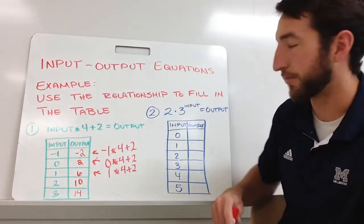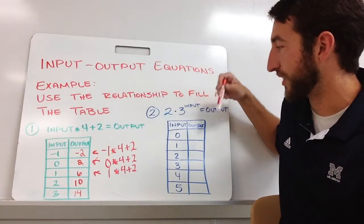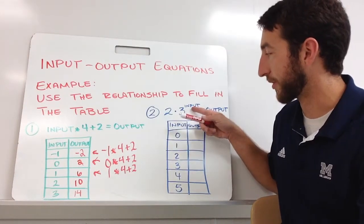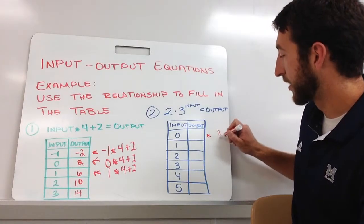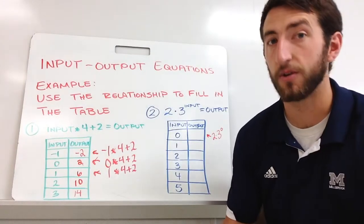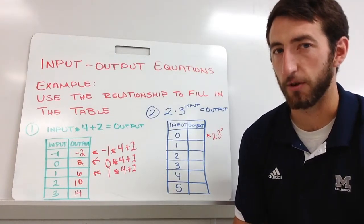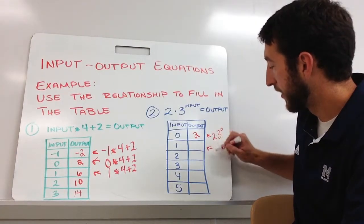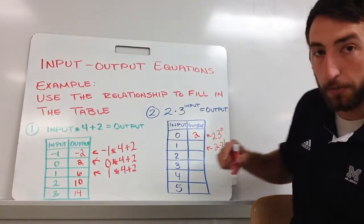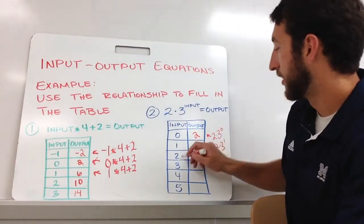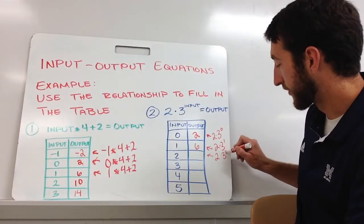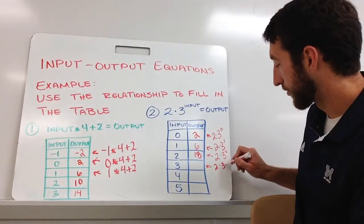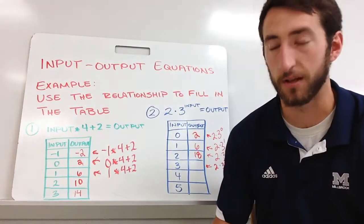Let's go over example number two — this one has an exponent. We've got two times three raised to the input equals the output. Follow order of operations: do the exponent first, then multiply. For input zero: three to the zero is one, times two is two. Input one: three to the first is three, times two is six. Input two: three squared is nine, times two is eighteen. We're going to get bigger pretty fast.